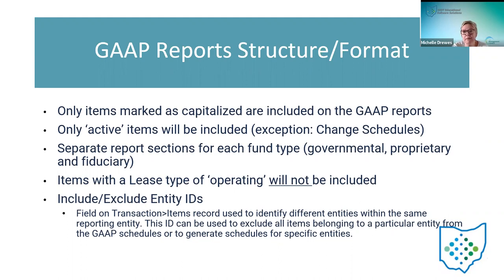Items with a lease type of operating will not be included. If you add an item to the items screen with a lease method marked and in the lease section you mark it as an operating lease and not a capital lease, those operating leases will not be included in the GAAP reports. Capital leases will be included.